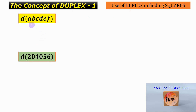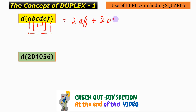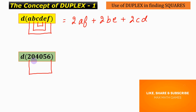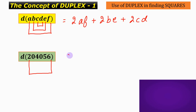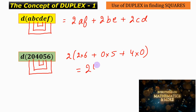The duplex of abcdef will be given by the duplex of af plus the duplex of be plus the duplex of cd, which can be written as 2af plus 2be plus 2cd, or with 2 factored out. So the duplex of 2 0 4 0 5 6 will be 2 into (2 into 6 plus 0 into 5 plus 4 into 0), and this expression comes out to be equals to 24.